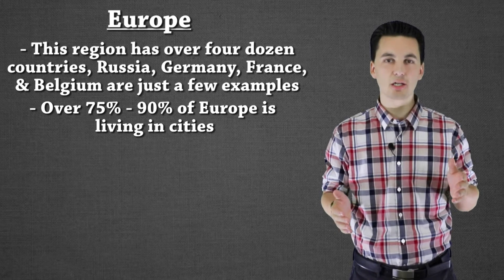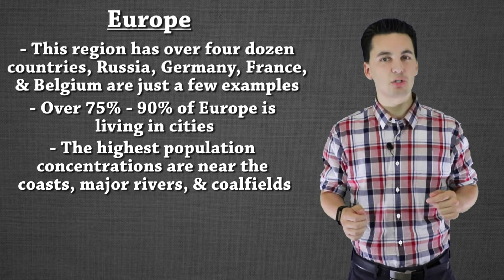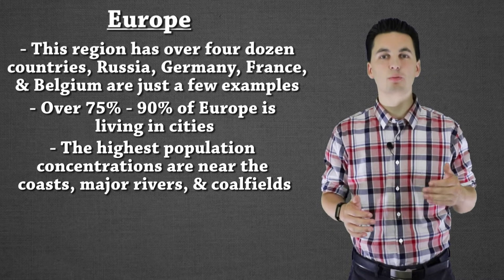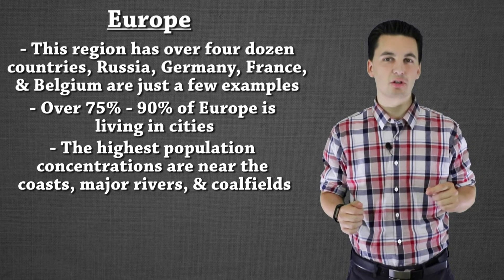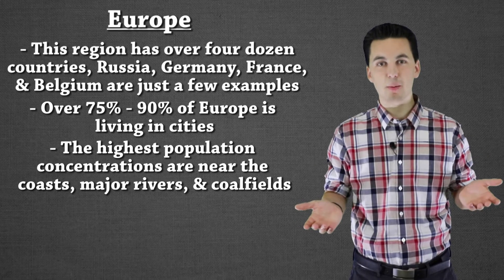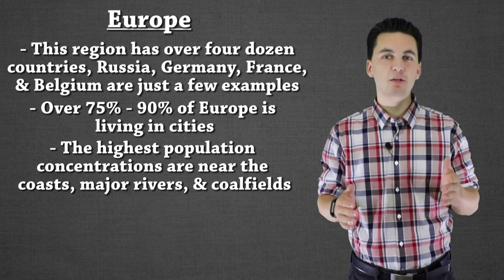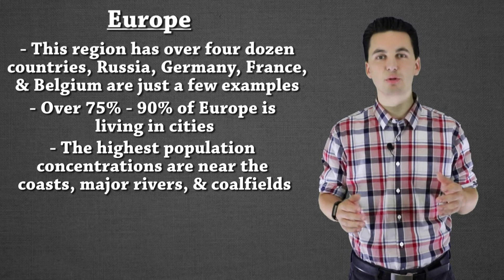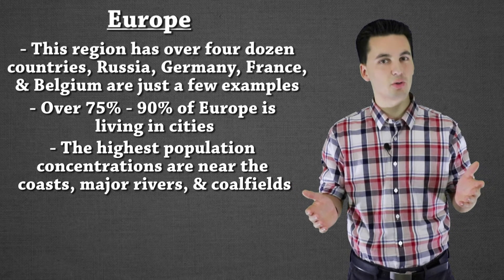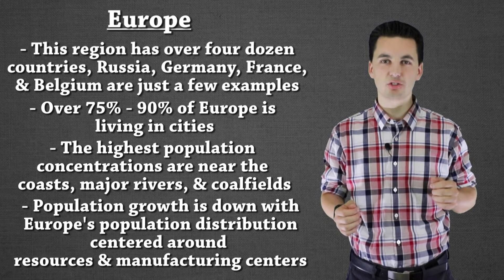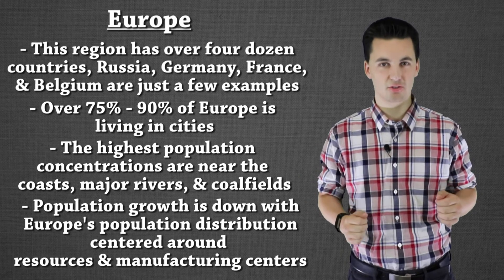The majority of people in Europe still live on a coast or near a river, just like in South and East Asia. However, there is one unique thing about this region: we have a lot of population clusters formed around coal fields and resources. Part of this is because of the unique history where the Industrial Revolution happened. So we have major cities that formed not necessarily just by waterways — which is traditionally where we see them in other parts of the world — but also around manufacturing resources. Big population densities are focused around cities like London and Paris.